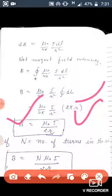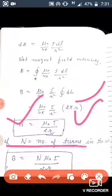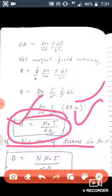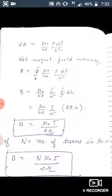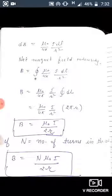This is the magnetic field intensity at the center of a single circular loop. However, our coil consists of N number of turns, so the net magnetic field intensity at the center of the coil for N turns is: B = N·μ₀·i / 2r, where N is the number of turns in the coil.